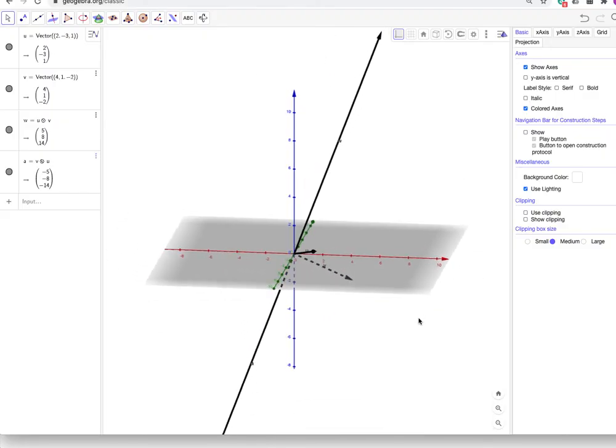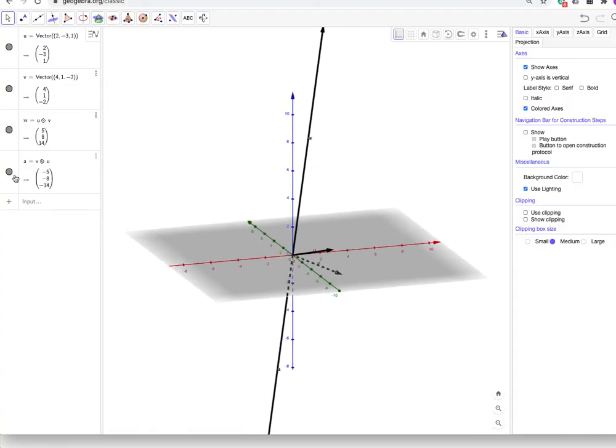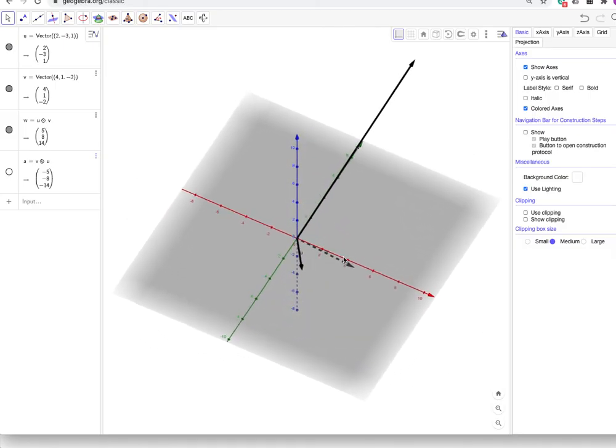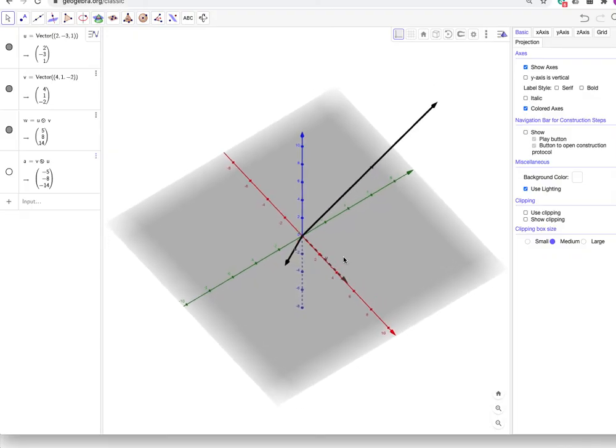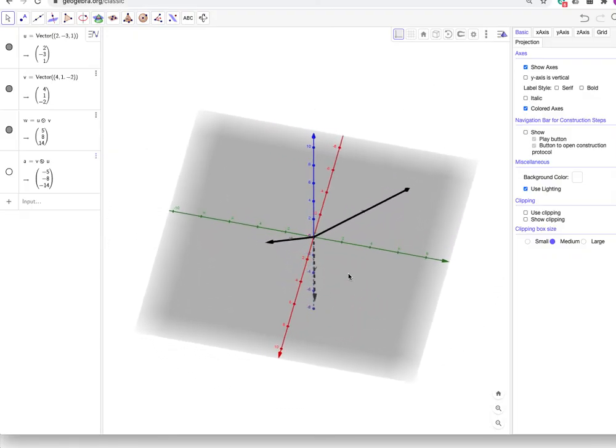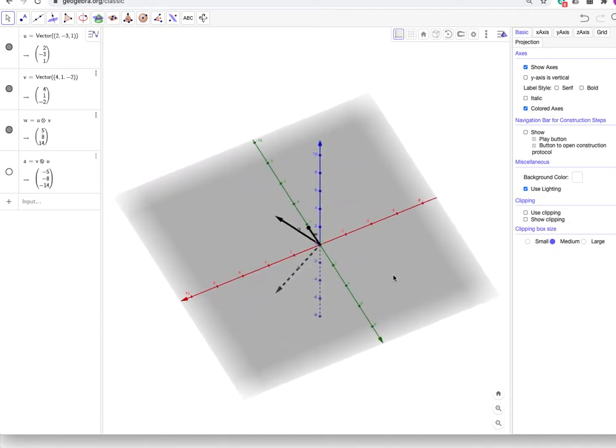Now the magnitude, as I said kind of very briefly there, the magnitude of these vectors, let's just look at the first one. The magnitude of this vector is the magnitude of u times the magnitude of v times the sine of the angle between them. And again, I will do a lesson explaining that in more detail.